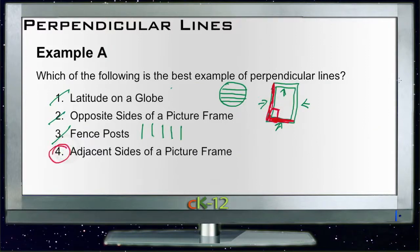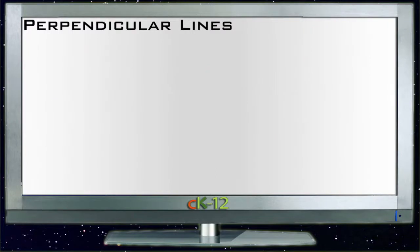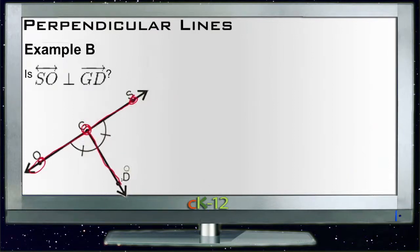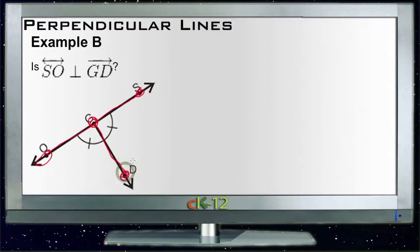Okay, Example B says is line SO perpendicular to line GD? So is the line running from here through there and through here perpendicular to the line running from here through here down to D?